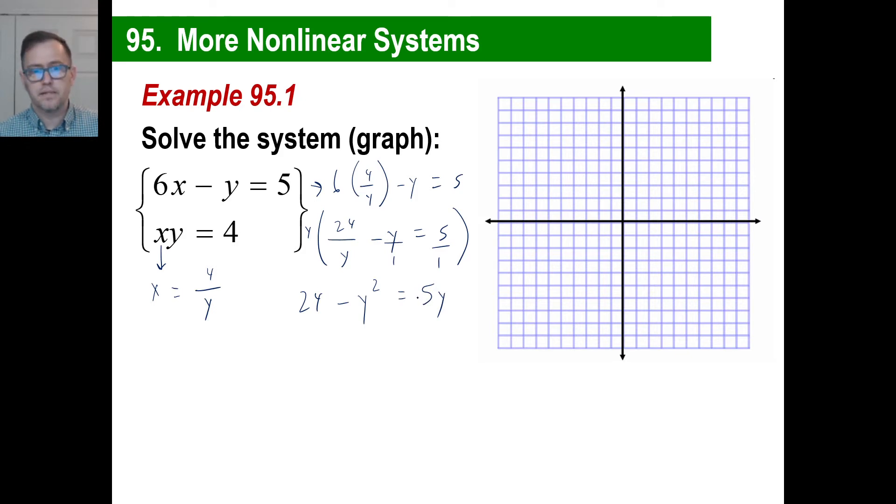6 times 4 is 24. That's going to be over y minus y equals 5. Well, we're trying to solve for y here. We've got an equation here with a y in the denominator, so we've got to multiply the entire thing by y. As if this is over 1 and this is over 1. So the first part, we've got y's cancel, so we have 24. The second part, we have y squared. And the third part, we have 5y.